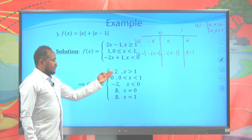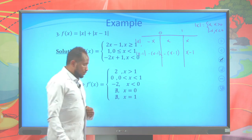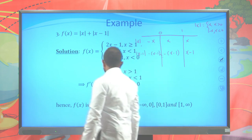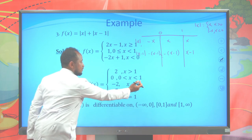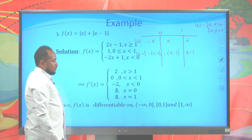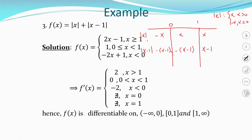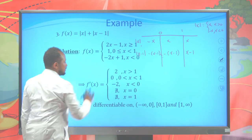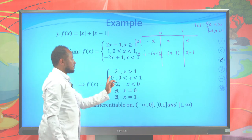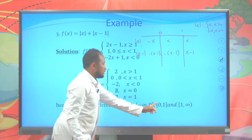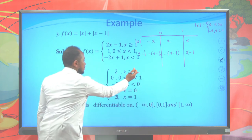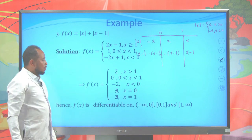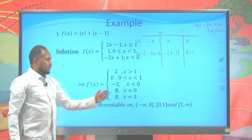Now write the interval of differentiability. This function is differentiable for x less than 0, from negative infinity up to 0. It is also differentiable from the left side of 0, so the interval is negative infinity up to closed 0. From 0 to 1, it is differentiable from the right side of 0 and the left side of 1, so the interval is closed 0 to closed 1. From 1 up to infinity, it is differentiable from the right side of 1, so the interval is closed 1 to infinity. The differentiability intervals for this function are those three intervals.